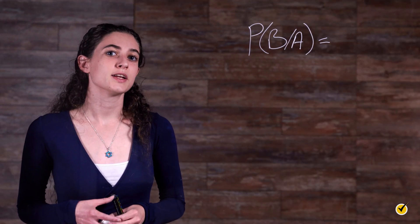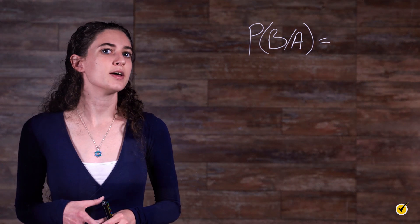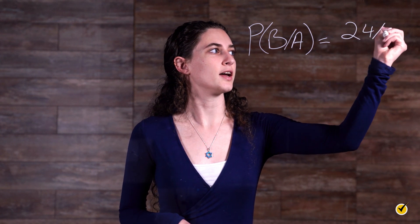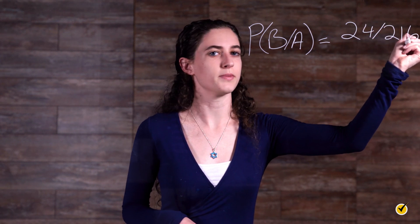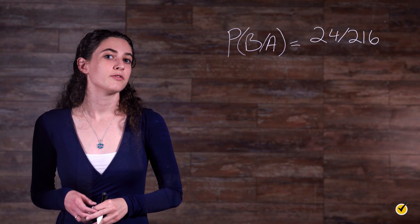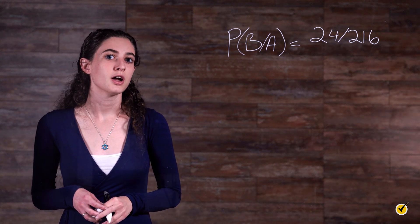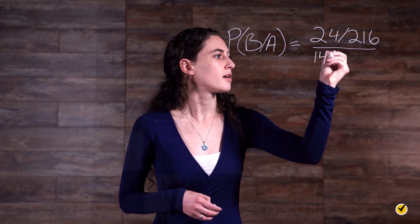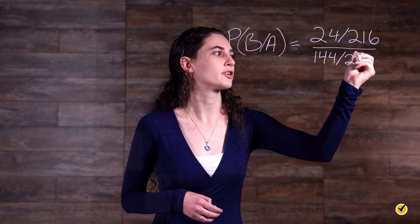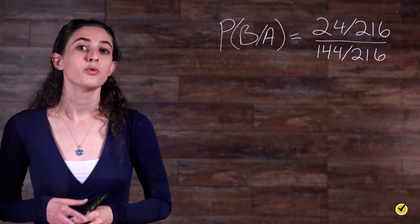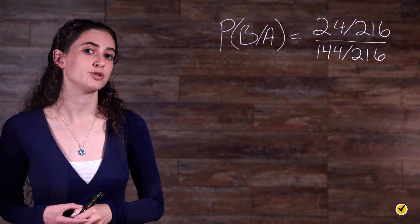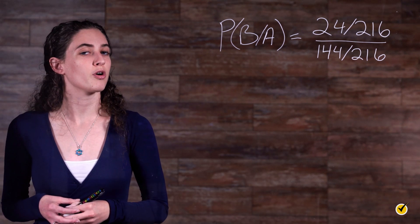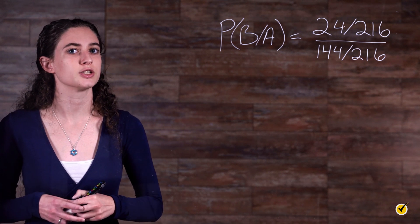The probability of event A, brown hair, and event B, mustache, is the 24 men with both divided by the 216 total men. The probability of event A, brown hair, is 144 divided by the original 216 men. We divide 24 over 216 by 144 over 216 using fraction division.